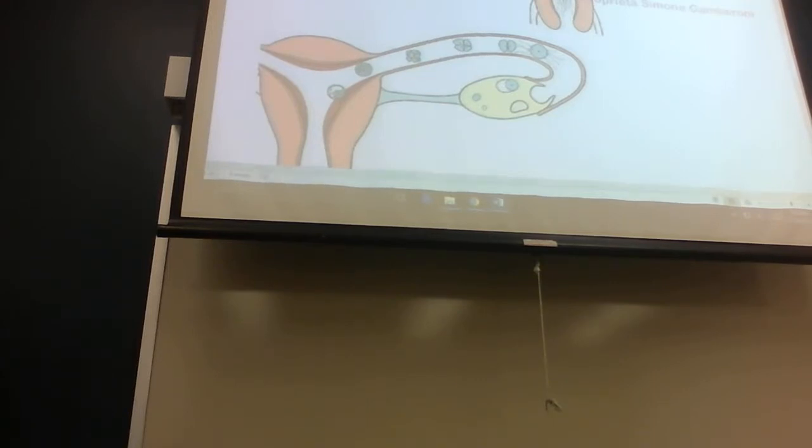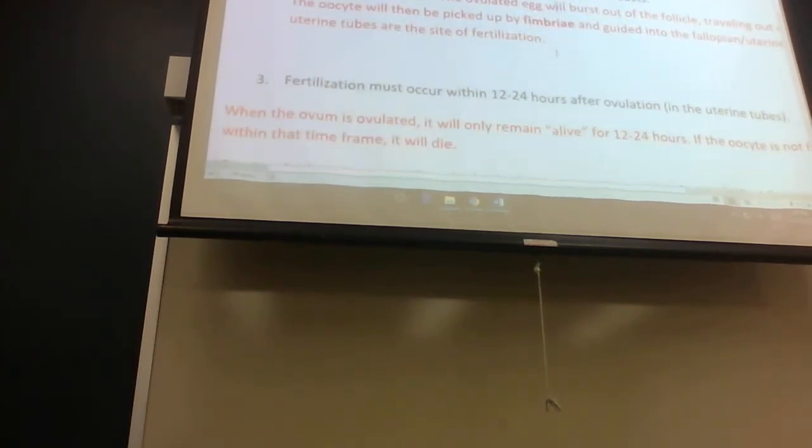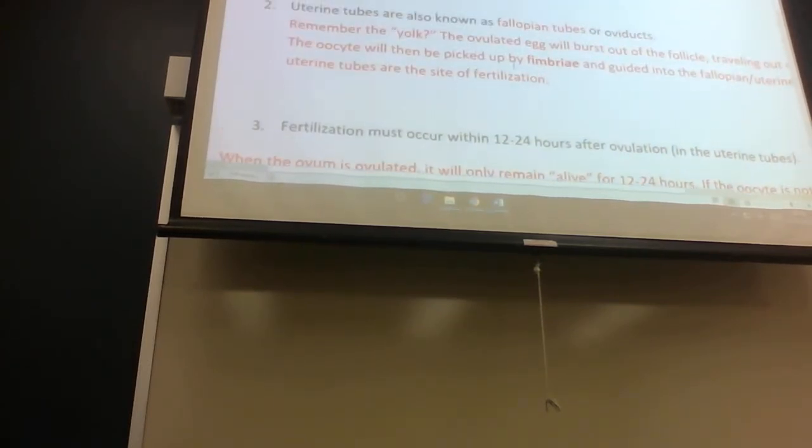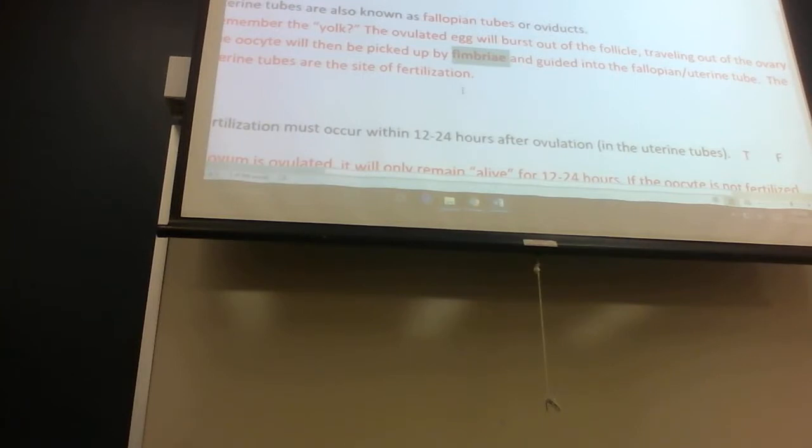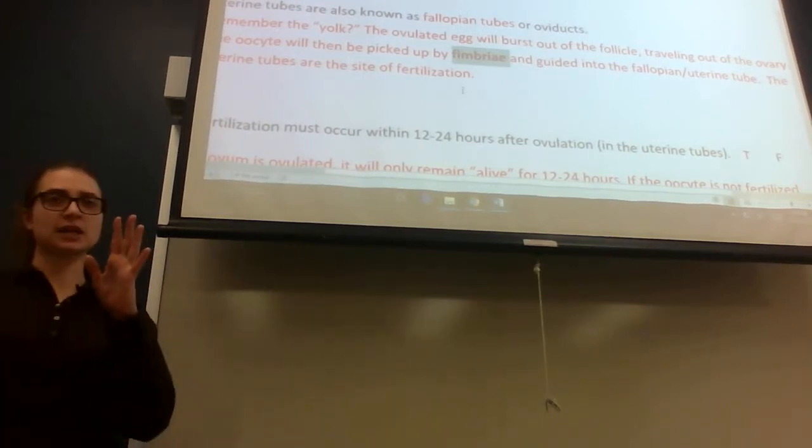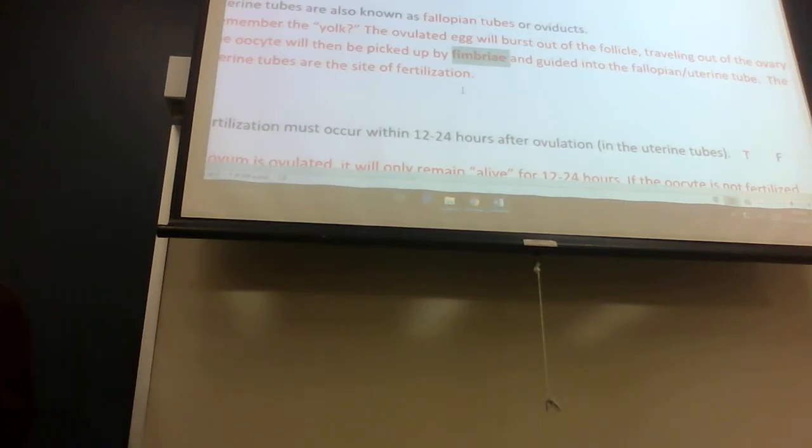It's really important for the egg to travel to the uterus because if the baby's developing in the fallopian tubes, that's not good. The child, that's a very complicated pregnancy. Within the uterine tubes, there's fimbriae, which is kind of like finger-like projections that hold on to the egg and wait for the egg to be fertilized.